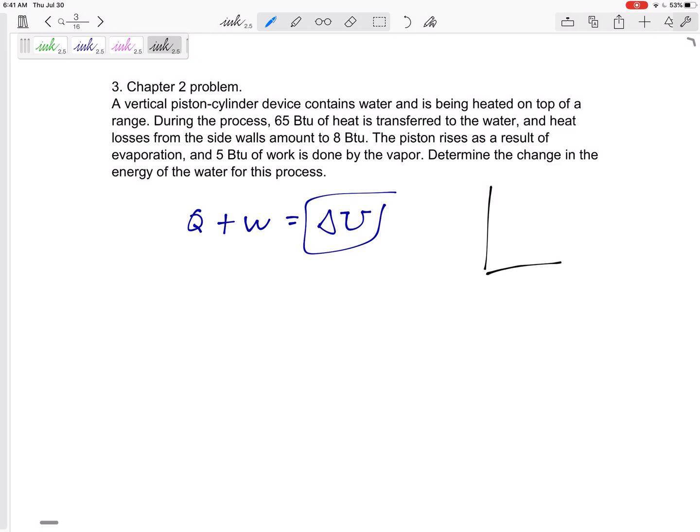We're just keeping up with the Qs and Us that are going into and out of our system. We've got this water, let's see, 65 BTUs is transferred to the water. So we've got 65 BTUs of energy going into the water. Heat losses, we've got 8 BTUs going out.